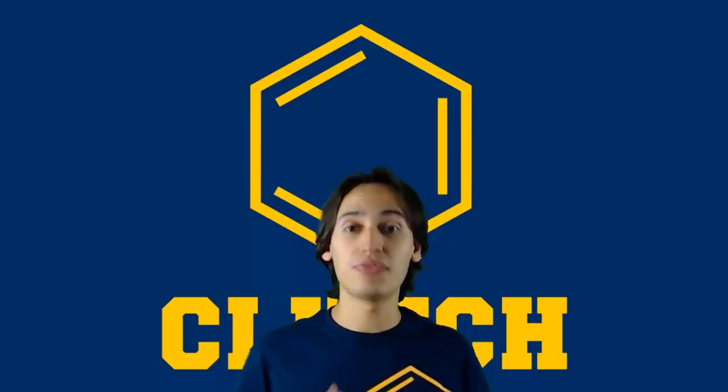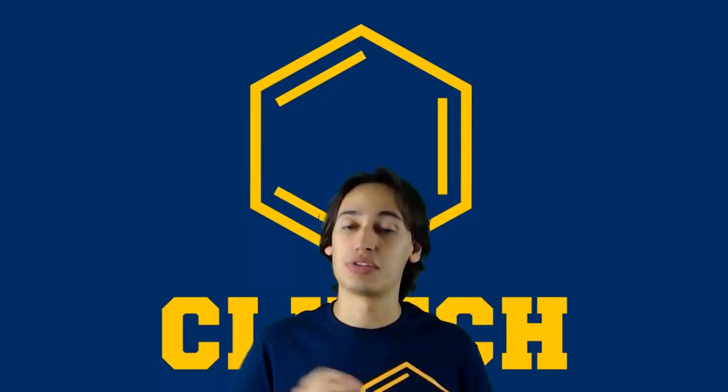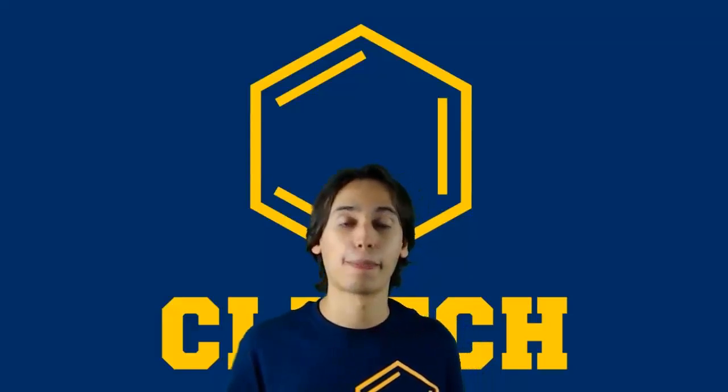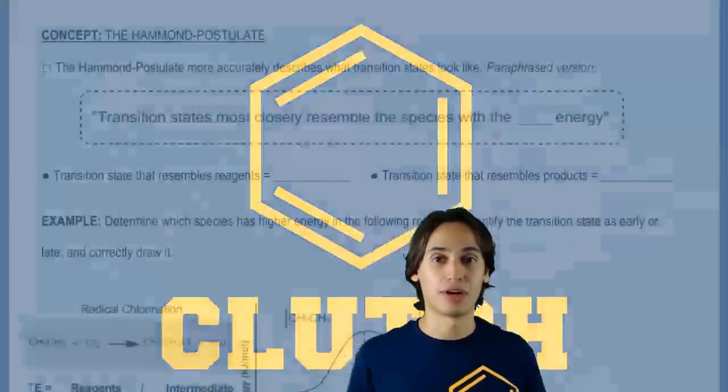But it turns out that there's actually a very famous rule or postulate that was developed a while back to determine exactly what these transition states will look like depending on where they are in the free energy diagram. And that is called the Hammond postulate.